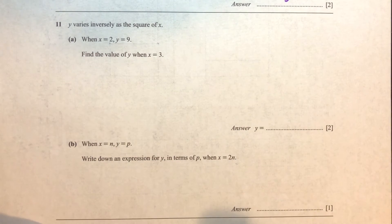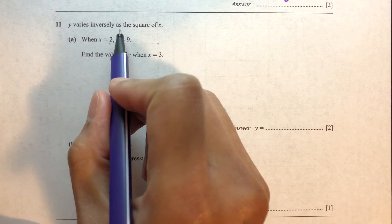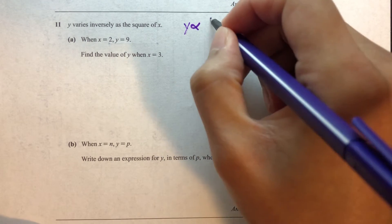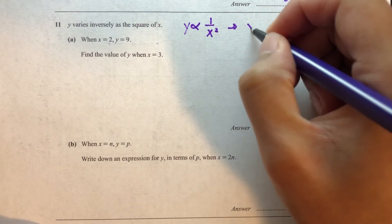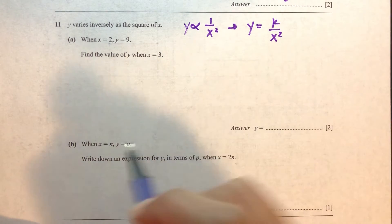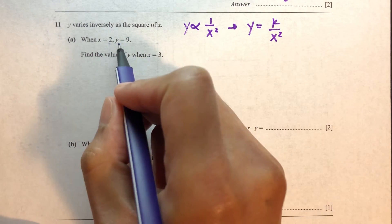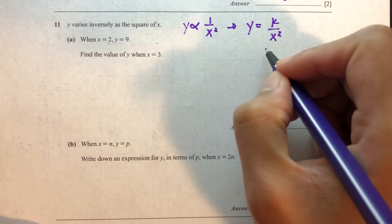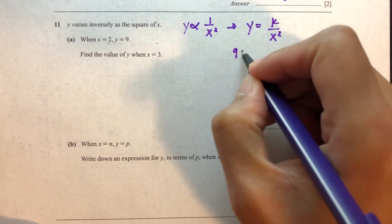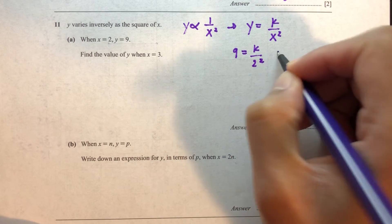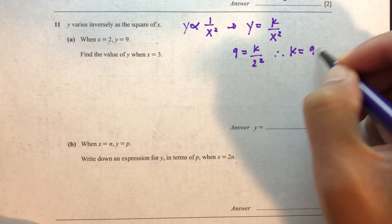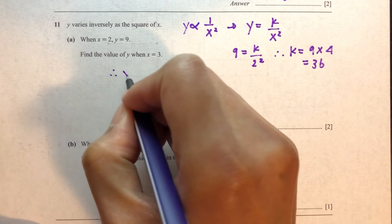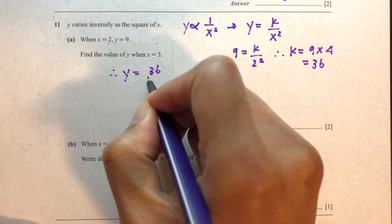Question number 11. y varies inversely as the square of x, which gives us the formula y equals k over x squared. When x is equal to 2, y is equal to 9. Replace those values and find k: k equals 9 times 2 squared, so the value of k is 9 times 4, which is 36.